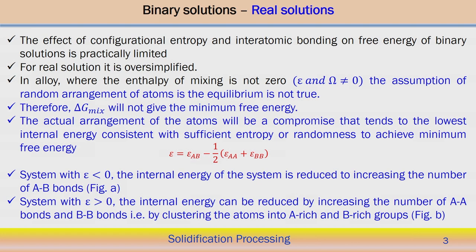In an alloy where the enthalpy of mixing is not zero, the assumption of the random arrangement of atoms in equilibrium is not actually true, because in equilibrium the arrangement of atoms in random arrangement is not true. So that is one aspect of deviation from the other cases. Therefore, the delta G mix we have calculated may not be able to give an estimate of the free energy in case of the real solution.